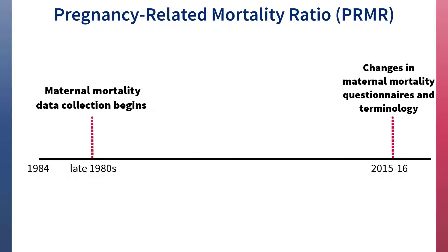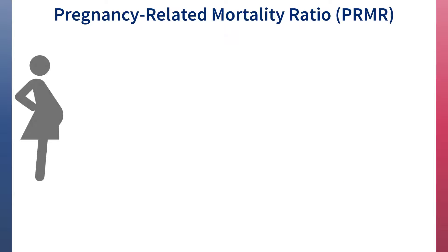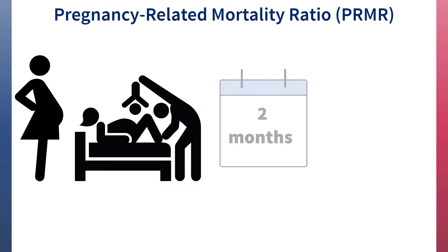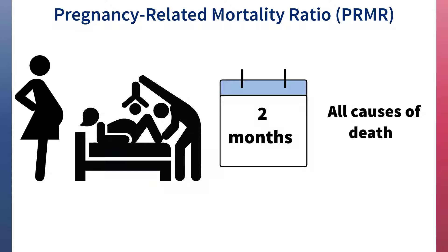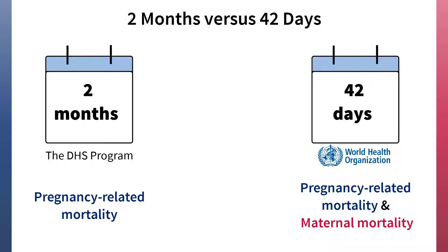DHS will also present the Pregnancy-Related Mortality Ratio, or PRMR. The PRMR is comparable to what DHS previously described as the MMR prior to 2016, and therefore can be used to describe trends. The DHS program defines pregnancy-related mortality as deaths of women while pregnant, during childbirth, or within two months of delivery or end of pregnancy. Pregnancy-related deaths include deaths from any cause during this time period. You may be asking why DHS uses two months after the end of a pregnancy for estimating pregnancy-related mortality, when for WHO the relevant interval is 42 days following the end of a pregnancy.